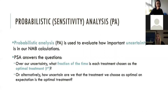If a single strategy is always cost-effective at a given willingness-to-pay threshold, we are not uncertain about our choice even with imperfect information. On the other hand, if several strategies appear cost-effective at attractively high frequencies, we are much less certain about the optimal strategy, since we do not know which parameter values are the true actual values — our prior uncertainty makes us uncertain about the optimal intervention.